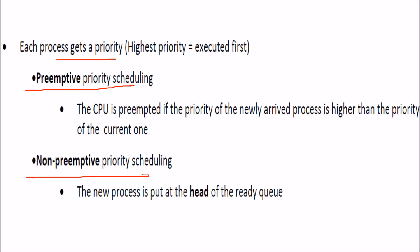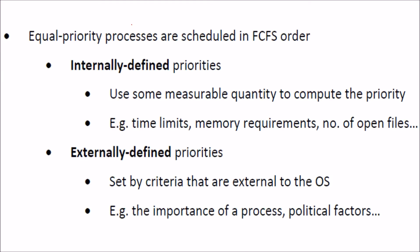To determine the length of the next CPU burst, you can estimate it using the length of previous CPU bursts via exponential averaging. If a process took a certain amount of time previously, you can predict what it will take next. This is how SJF can be approximated in practice.